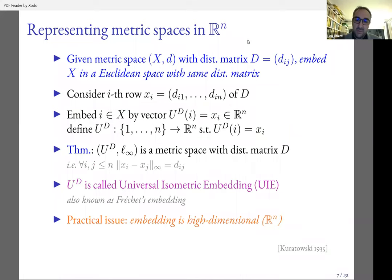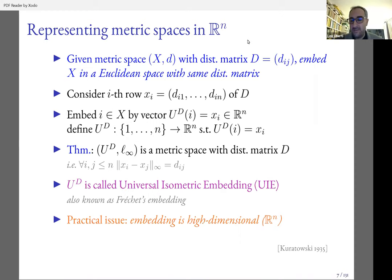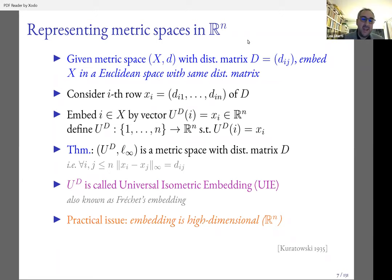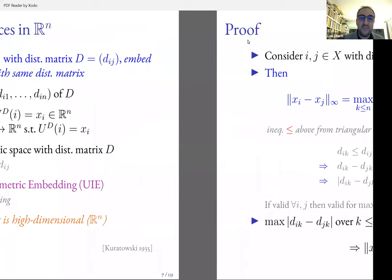I think the result was actually found by Kuratowski but was probably implicit in Fréchet's work. The practical issue is that this embedding is high dimensional — it's in R^n, with n dimensions. If you have a metric space with millions or billions of elements, every vector will have billions of components and every computation will take billions of CPU cycles.